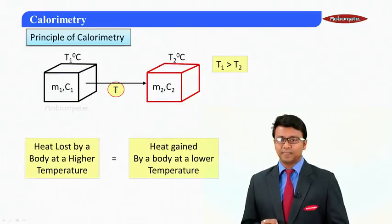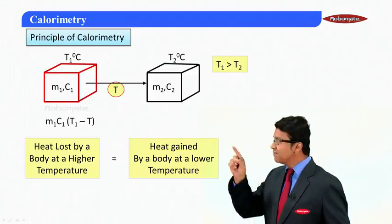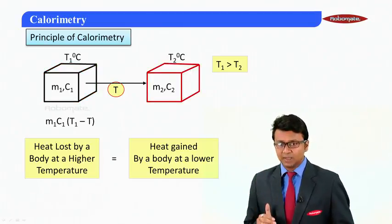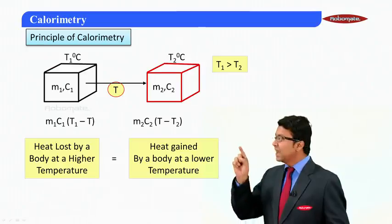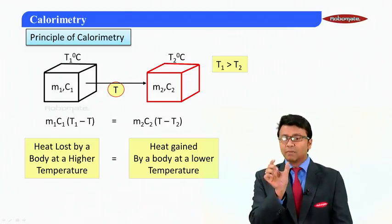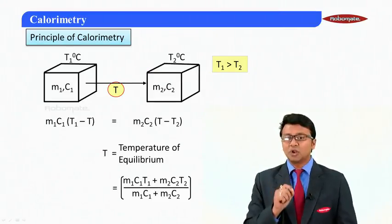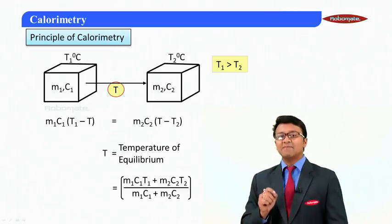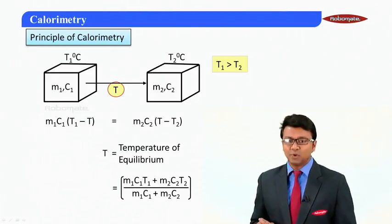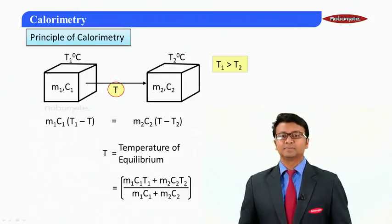The principle of calorimetry states that heat lost by the body at a higher temperature equals heat gained by the body at a lower temperature. Heat lost = m1·c1·(t1 − t), and heat gained = m2·c2·(t − t2), where t is the equilibrium temperature. Equating them and solving, the equilibrium temperature is given by: t = (m1·c1·t1 + m2·c2·t2) / (m1·c1 + m2·c2). We will apply this concept in the numericals ahead.